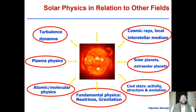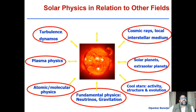In the universe, 99.9% of all matter is actually in the plasma state. When temperature goes to very, very high beyond the gaseous state, it becomes a combination of electrons, neutrals, and charged particles — that is called the plasma state. Majority of the universe is in the plasma state. So if you want to study plasma physics, the sun provides the ideal laboratory.